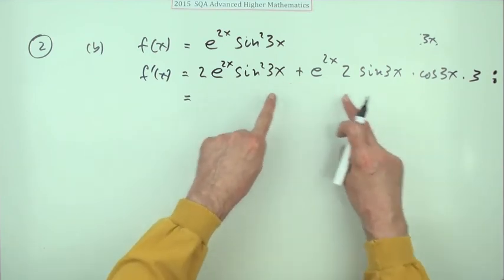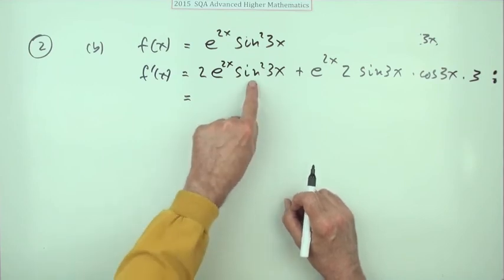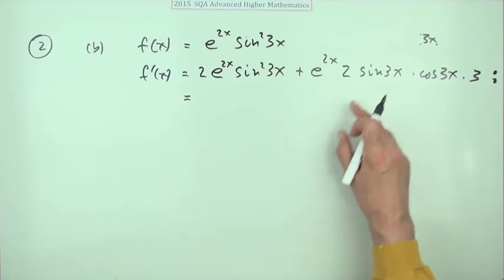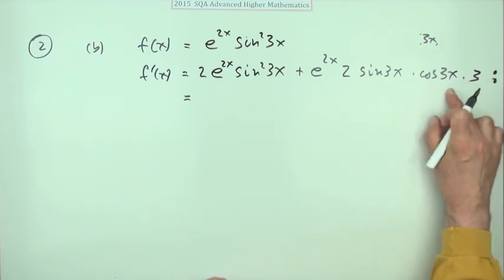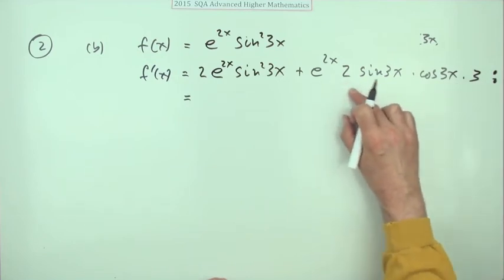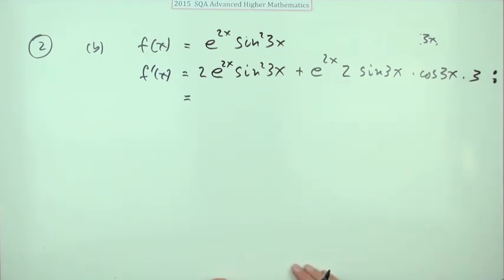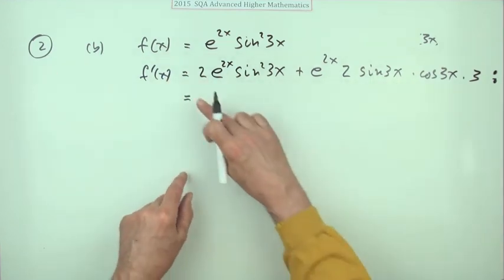Now the third mark's for tidying it all up. Now there's a couple of different ways of doing that depending on how you interpret these things. You could either say I'll go for common factors first, in which case you could pull out a sine 3x with that sine 3x, or you might say well look at that 2 sine 3x cos 3x, that's the double angle formula for sine 6x. So you've got two routes.